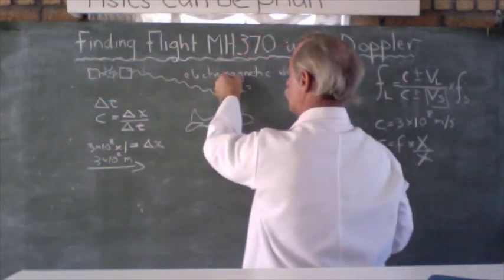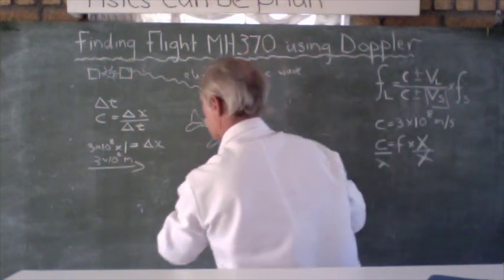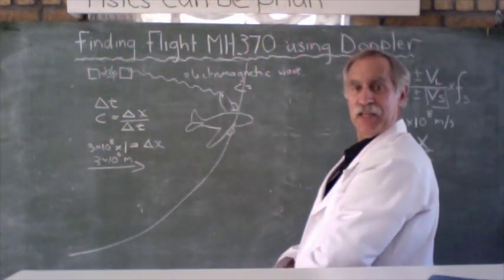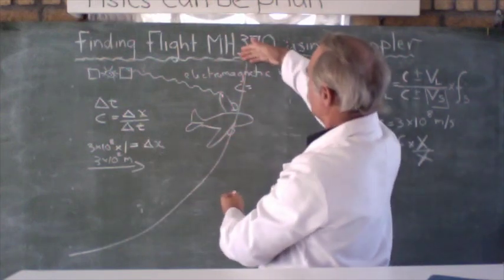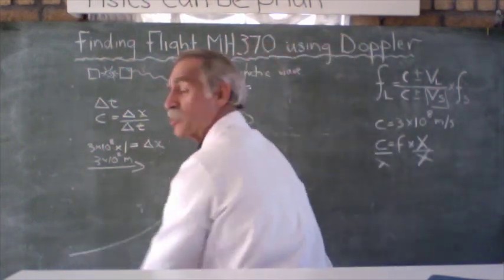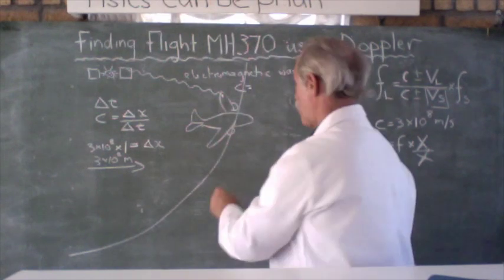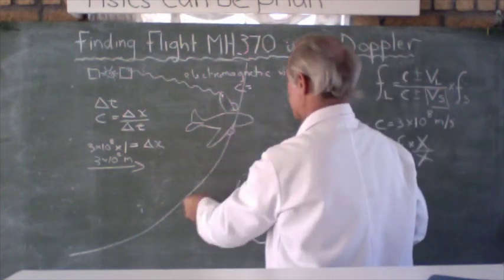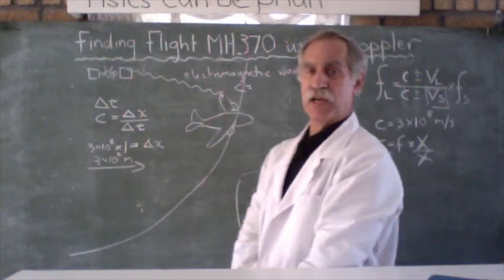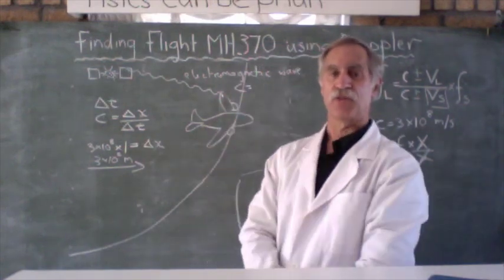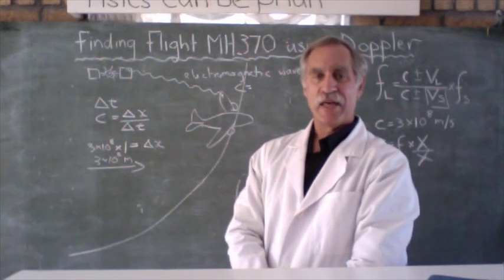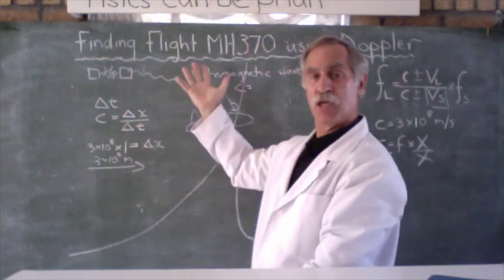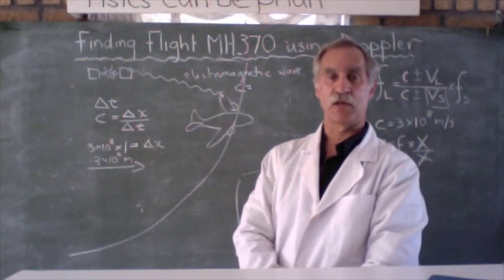So now from just measuring the time that it took for the signal to get to the satellite, knowing it traveled at the speed of light, they could figure out delta X or the distance of the plane from the satellite. But that distance, if this is the center of a circle, that plane could be anywhere on the circumference of this circle where the satellite is the center. So that is where we get an arc to the north, which goes to China, and an arc to the south, which goes past the west coast of Australia.